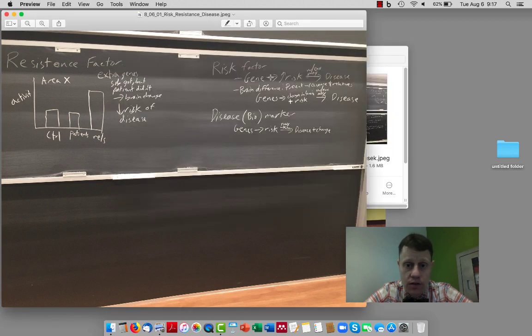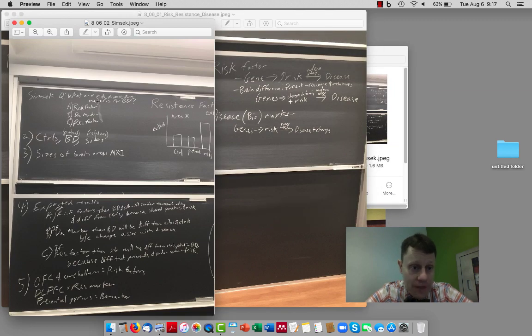We talked about one particular research study looking at risk factors and resistance markers, the SIMS-X study. And like all the studies we've talked about that look for the difference between risk factors and disease markers, there's a set of controls, a set of probands, people with the disease, in this case bipolar, and then healthy relatives.